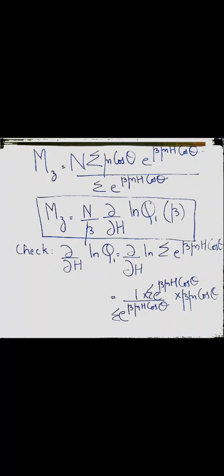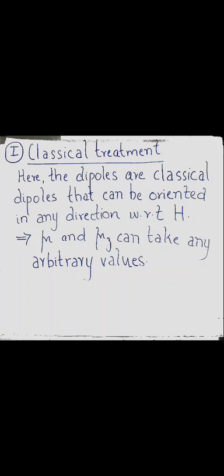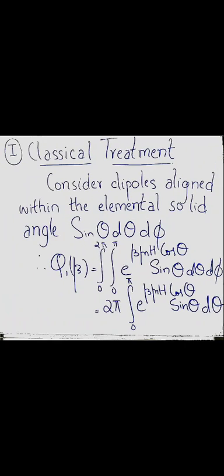From the partition function we can calculate the magnetization of the system. Like the harmonic oscillator, we can follow two approaches: the classical approach and the quantum mechanical approach. In the classical treatment, we consider dipoles that can be oriented in any direction with respect to the applied magnetic field H, meaning the dipole moment mu and its component mu_z can take any arbitrary values — which is not possible in the quantum mechanical treatment.